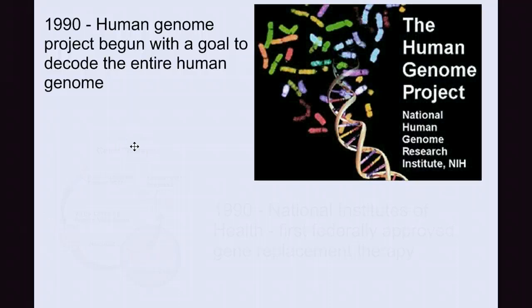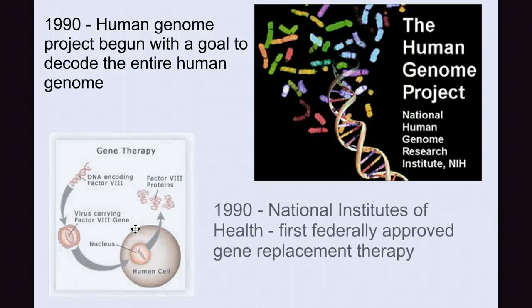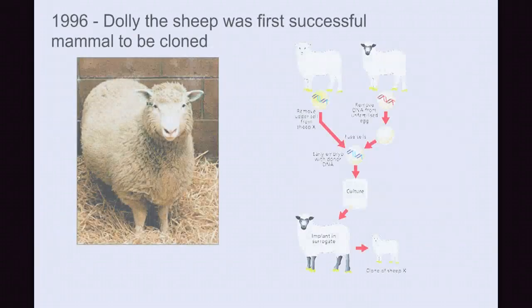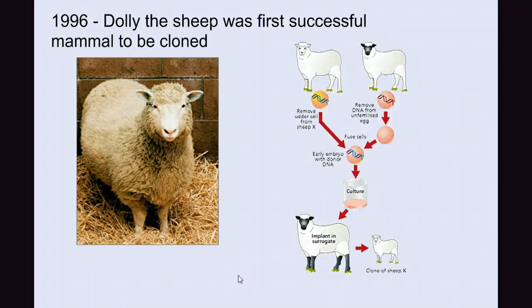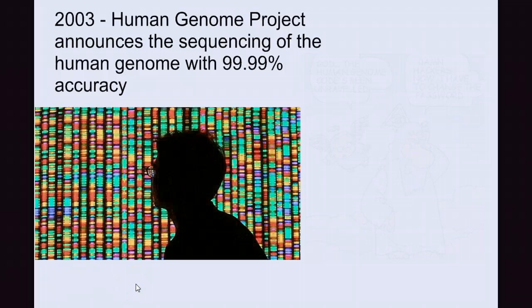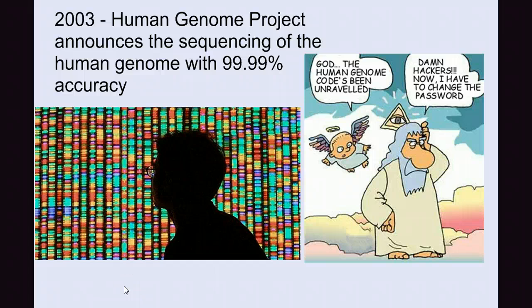And in 1990, the Human Genome Project began with a goal to decode the entire human genome. And also in 1990, the National Institutes of Health approved the first gene replacement therapy. In 1993, CalGene Incorporated produces the first commercially grown genetically engineered food to be granted license by the United States Department of Agriculture. They produced a tomato that was resistant to rotting. In 1996, Dolly was the first successful mammal to be cloned. In 2003, 50 years after Watson and Crick determined the double helix structure of DNA, the Human Genome Project announces the sequence of the human genome with 99.99% accuracy.